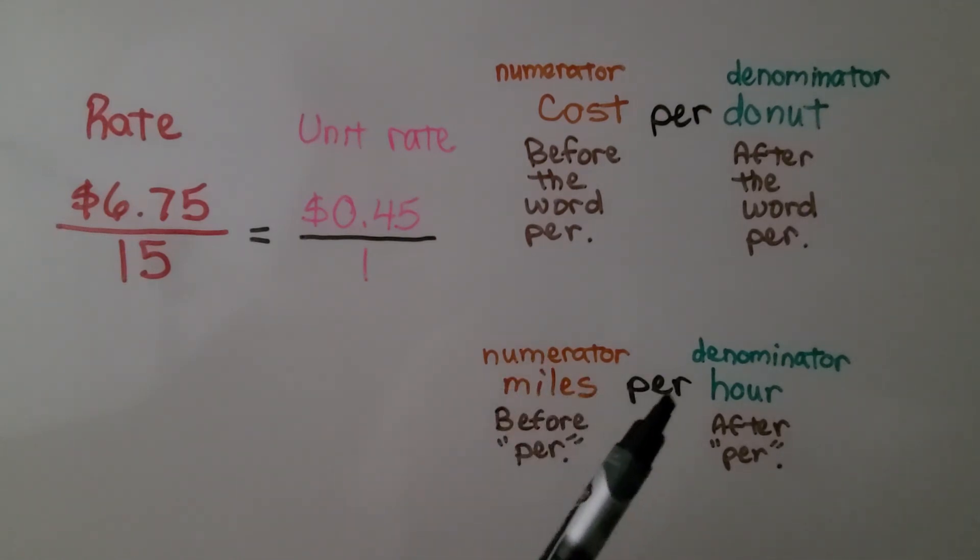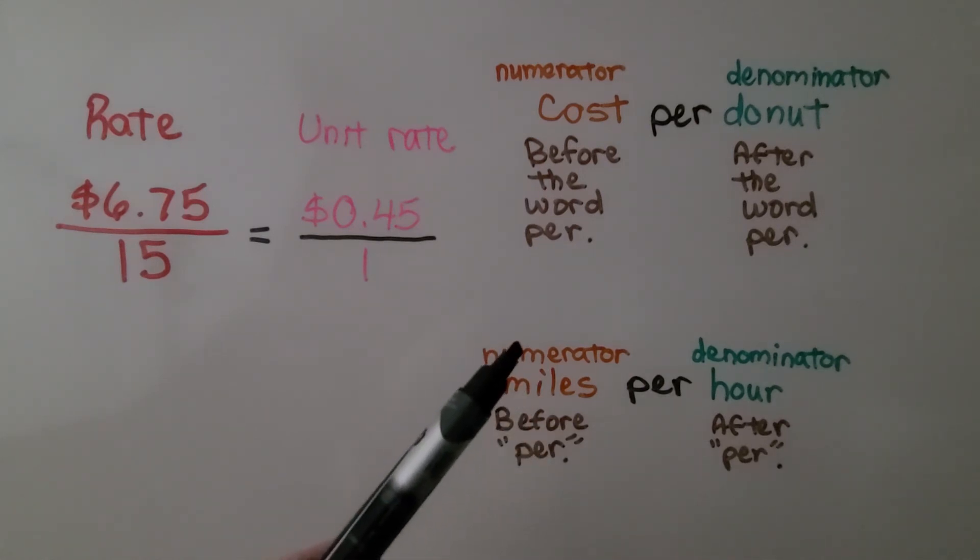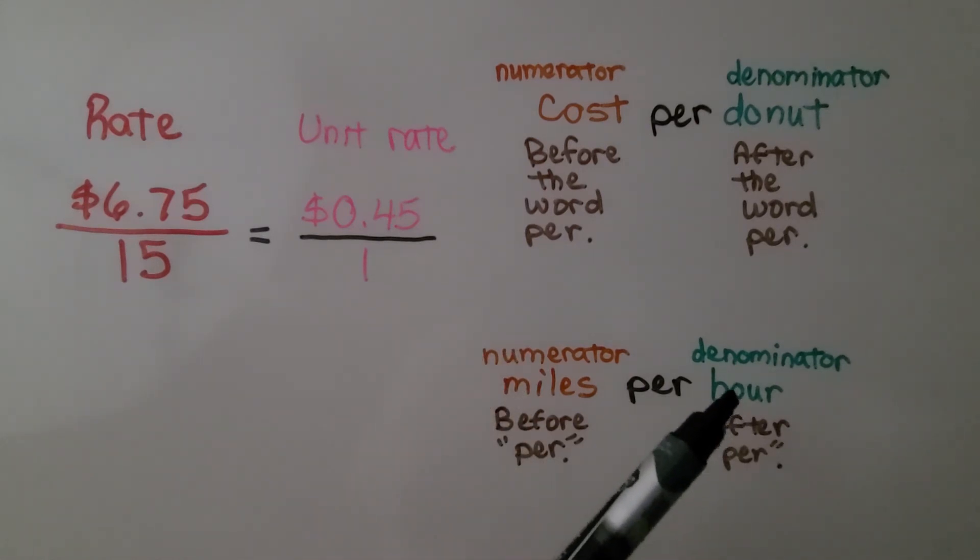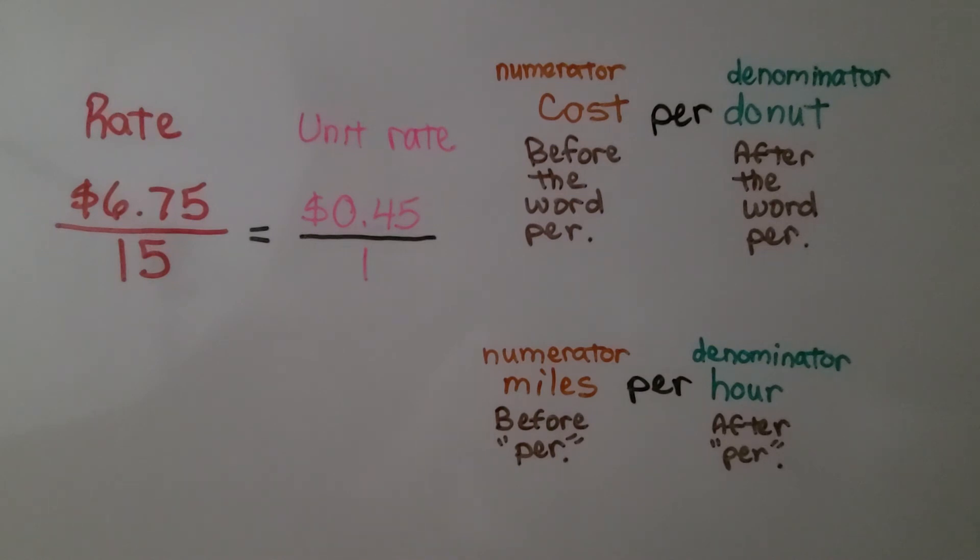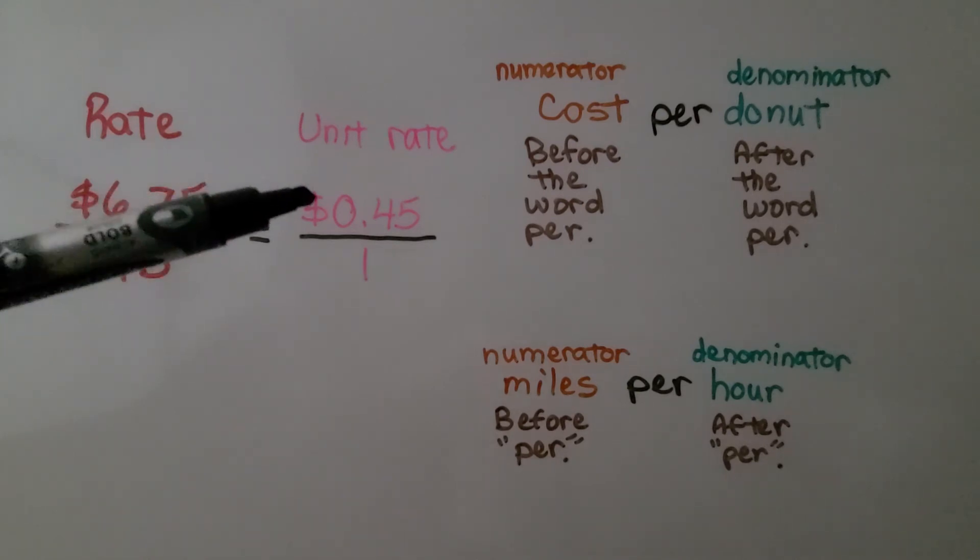If we saw miles per hour, the word miles is coming before the word per, so that's our numerator. And hour is coming after the word per, so that's going to be our denominator. And because fractions are division problems, we do $6.75 divided by 15, and that gives us our unit rate.